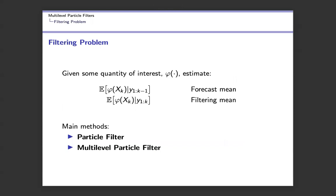The goal is to solve the filtering problem. We have a quantity of interest, and we want to estimate the forecast mean and the filtering mean. The forecast mean is the expected value of the quantity of interest at time k given all observations up to time k minus 1, while the filtering mean is the expected value at time k given all observations up to time k — so it incorporates the last observation. This quantity of interest is computed over the underlying process x_k, which we cannot observe directly.